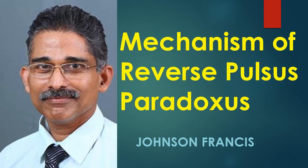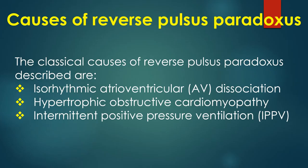Reverse pulsus paradoxus is an expiratory fall in pulse volume — the opposite of pulsus paradoxus. The classical causes described are isoarrhythmic AV dissociation, hypertrophic obstructive cardiomyopathy, and intermittent positive pressure ventilation (IPPV).